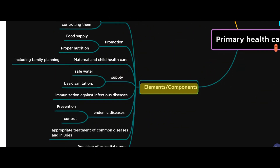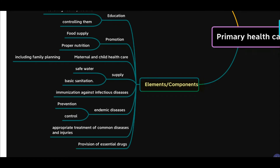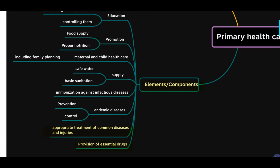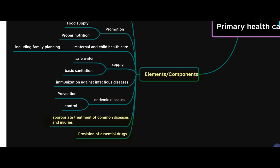Let's discuss the elements or components of primary health care. Because this is health care, you should be able to provide appropriate treatment of common diseases and injuries, and provision of essential drugs. This falls under the curative component — providing treatment and essential drugs.